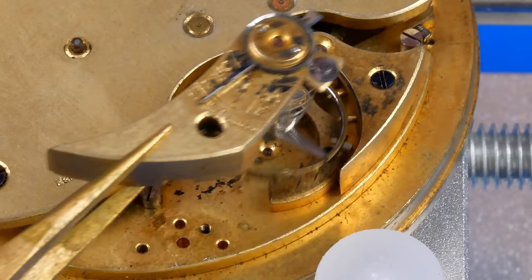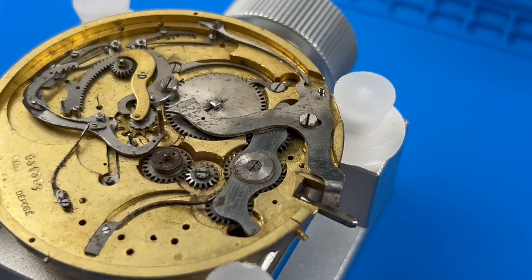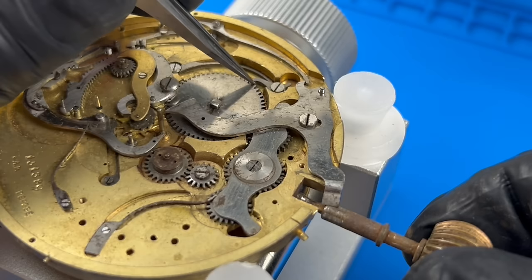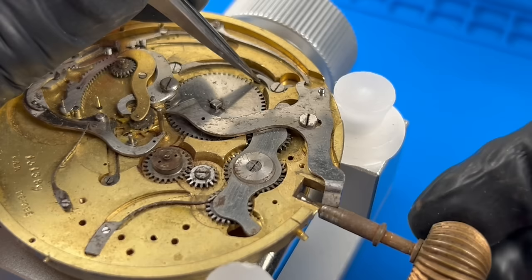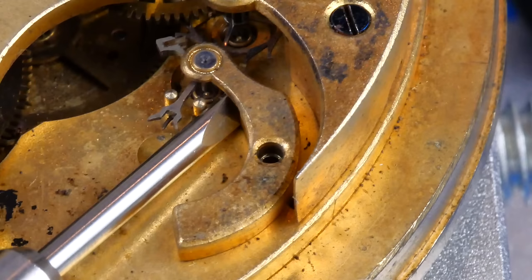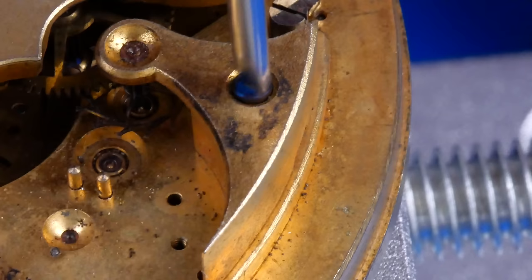The balance cock is removed, revealing how dirty the movement really is. The pallet fork seems fine, but notice the missing screw from the pallet cock. I will now attempt to let down the power of the mainspring, but I fear that happened prematurely when I removed the bezel. That's not supposed to do that. The pallet cock is carefully levered off the plate. And now the pallet fork can be removed.